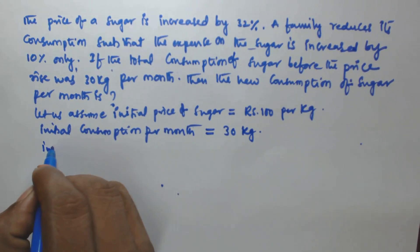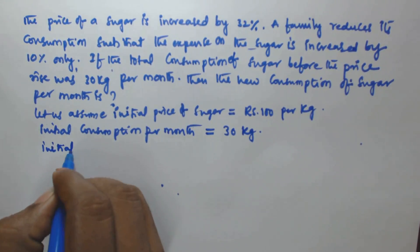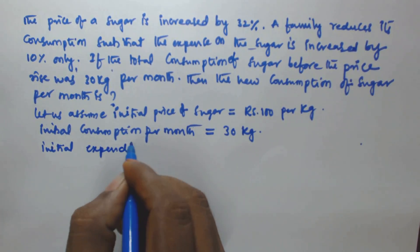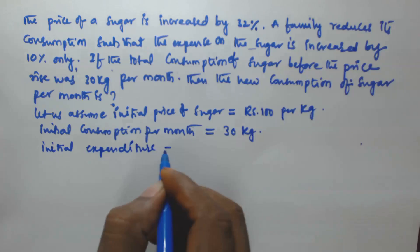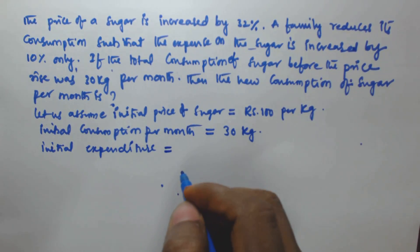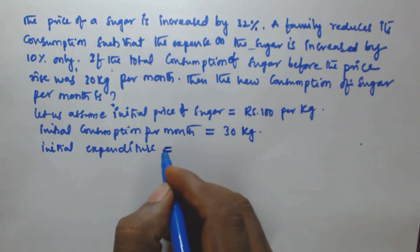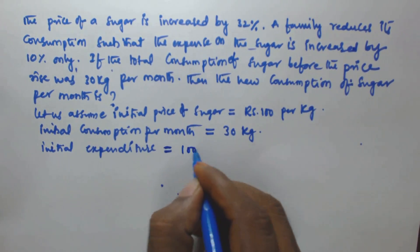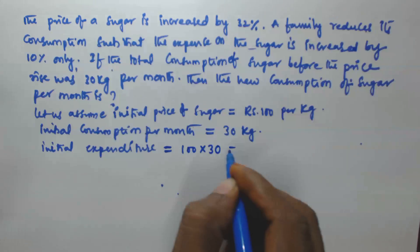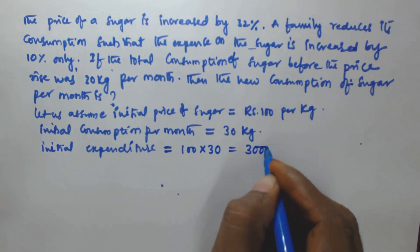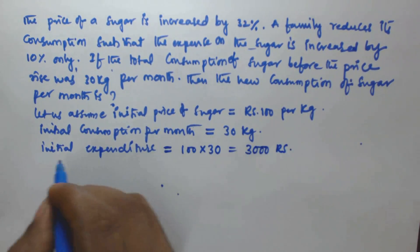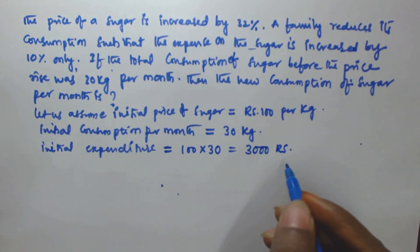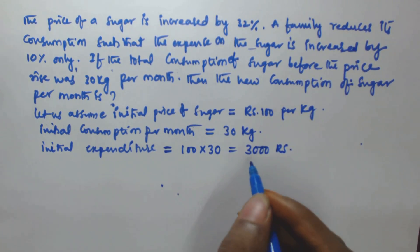Before the price rise, the initial consumption per month is equal to 30 kg per month. So the initial expenditure is equal to the cost per kg multiplied by the consumption — 100 into 30 — so that is going to be 3000 rupees.